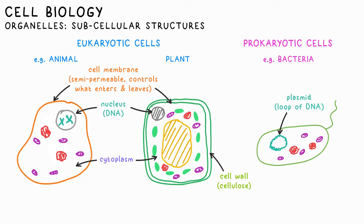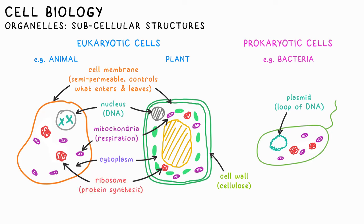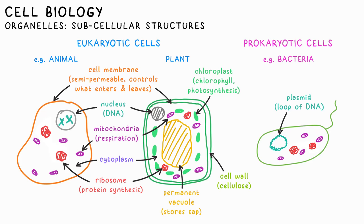Cytoplasm is the liquid that makes up the cell in which most chemical reactions take place. Mitochondria is where respiration takes place, releasing energy for the cell to function. Ribosomes are where proteins are assembled or synthesized. Plant cells also contain chloroplasts, which contain chlorophyll where photosynthesis takes place, and a permanent vacuole in which sap is stored.